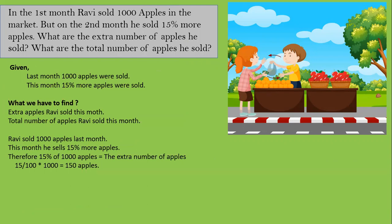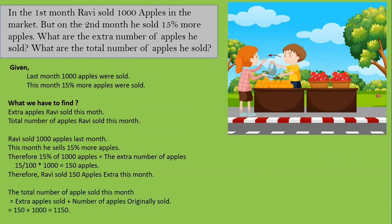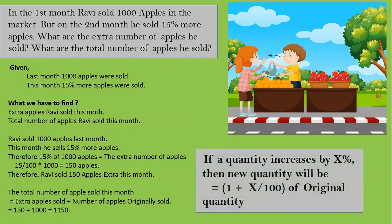The total number of apples is 1000 plus 150, which equals 1150. The formula is: if a quantity increases by x percent, then the new quantity equals (1 + x by 100) into original quantity. Here x is 15, so (1 + 15 by 100) into 1000 equals 115 by 100 into 1000, which gives 1150. You can use this formula or solve logically — both give the same answer.